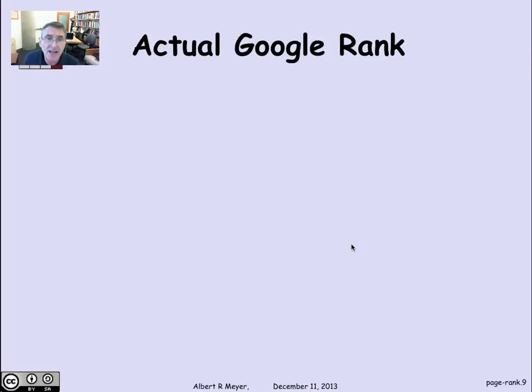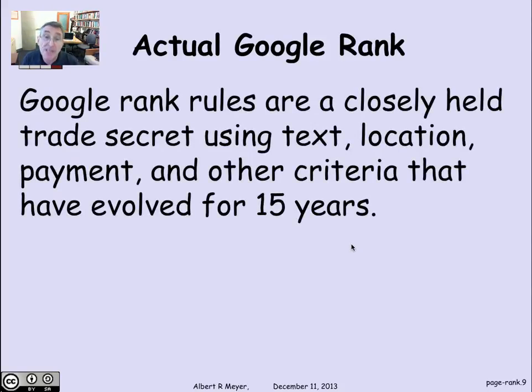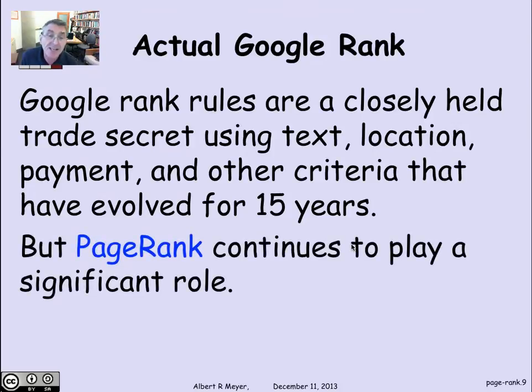The actual Google rank and ranking is more complicated than just PageRank. PageRank was the original idea that got a lot of attention. The latest information from Google is that they think it gets over-attention today by too many commentators trying to simulate ranking. The actual rank rules are a closely held trade secret by Google. They use text, location, payments because advertisers can pay to have their search results listed more prominently, and lots of other criteria that have evolved over 15 years. They continue to evolve as people find ways to manipulate the ranking and Google revises its ranking criteria and algorithms. Nevertheless, PageRank continues to play a significant role in the whole story.